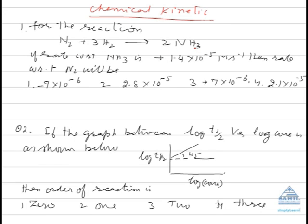If the rate with respect to ammonia is plus 1.4 × 10⁻⁵ molar per liter per second, then what is the rate with respect to nitrogen? Dear students, in order to equalize the reaction rate, divide them by their stoichiometric coefficients.